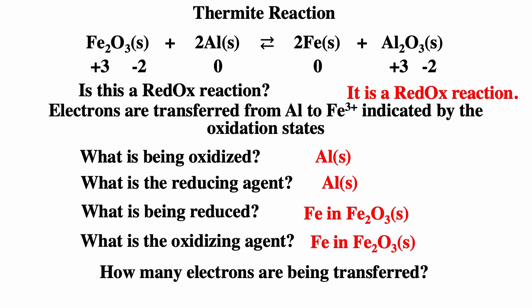To determine the number of electrons being transferred, we look at both steps. For the oxidation step, each aluminum loses three electrons and there are two aluminums: 2×3 = 6 electrons. For the reduction step, each iron gains three electrons and there are two irons: 2×3 = 6 electrons. The number of electrons in the oxidation step equals the number in the reduction step, which equals the number of electrons being transferred.